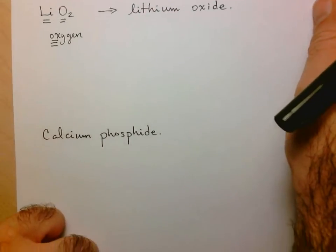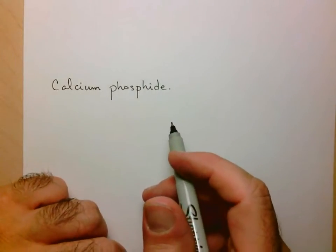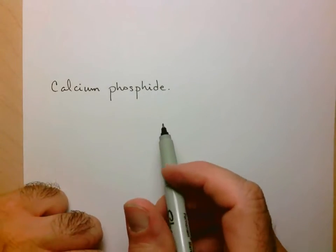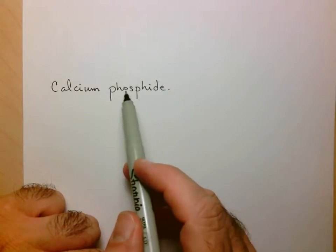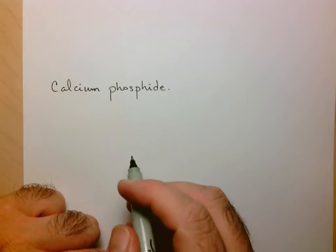Now let's go the other way. Say you're given the name and you have to determine the formula. I see calcium and I see phosphide - sounds like phosphorus - so metal, non-metal.